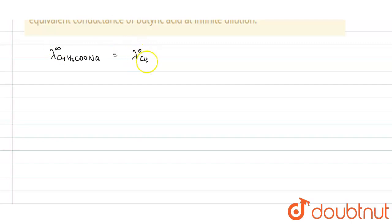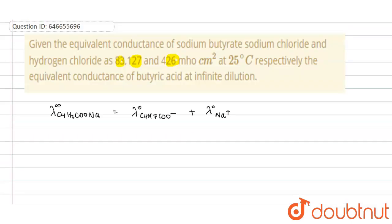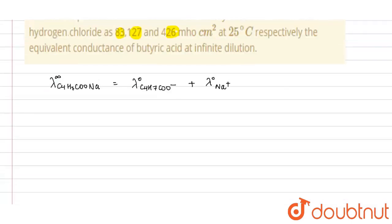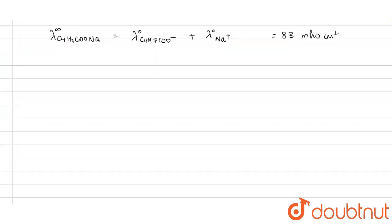Lambda naught of C4H7COO minus plus lambda naught of Na plus, and its value is given. This is sodium butyrate and its value given is 83 mho centimeter square. Now similarly for HCl...